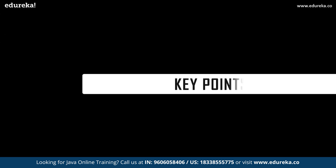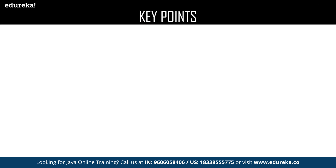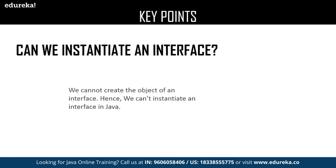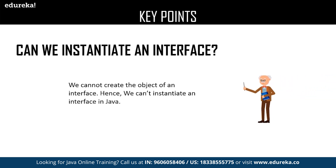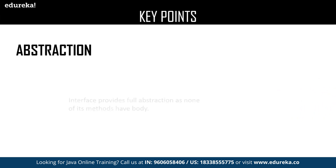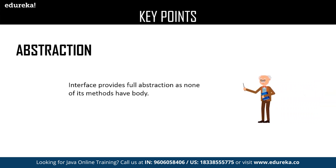Now let us discuss the key points about Java interfaces. First: can we instantiate an interface? We cannot create an object of an interface; hence we cannot provide instances in an interface. The next key point is abstraction — the major advantage of interface is abstraction because none of the methods declared in an interface have a body.